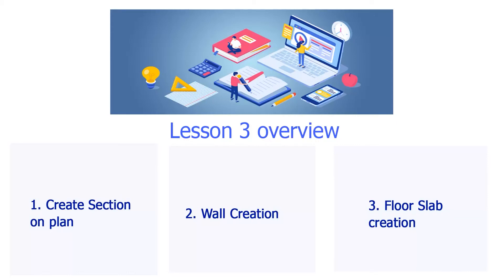Welcome to the Revit tutorial lesson 3. In this lesson, we are going to learn three things. First of all, we will create a section view by creating a section mark. Then, we will try to create a structural wall for the ground floor. Finally, we will create a more complicated floor slab for the first floor.